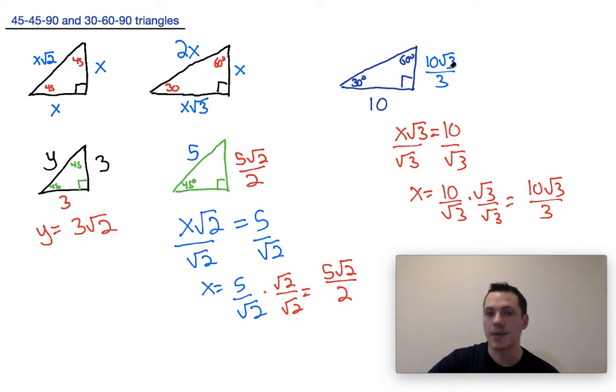To get the hypotenuse, the hypotenuse is equal to 2x. So if we take 2 times 10 root 3 over 3, we end up with 20 root 3 over 3. And that's how you deal with 45-45-90 triangles and 30-60-90 triangles in the most basic way that they appear.